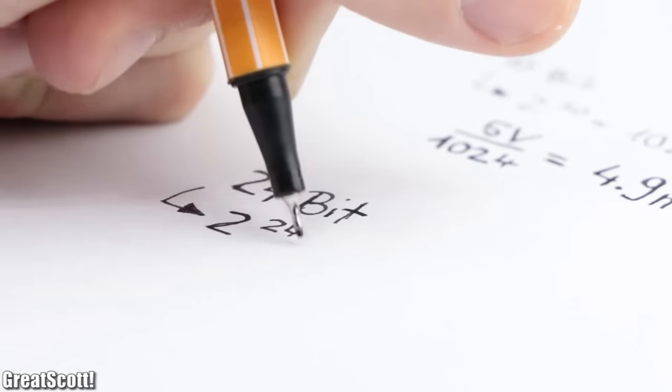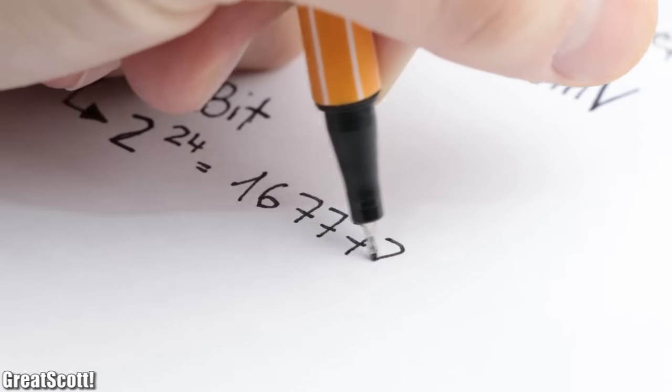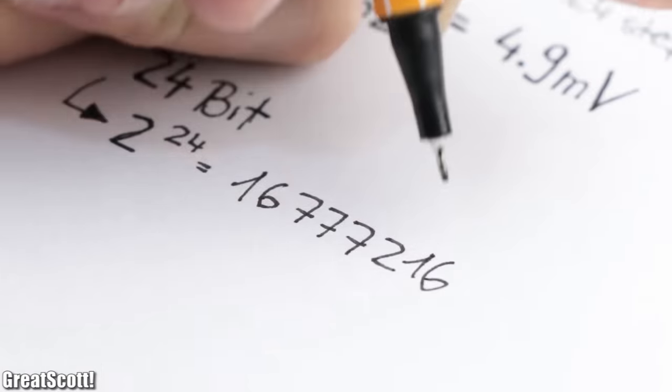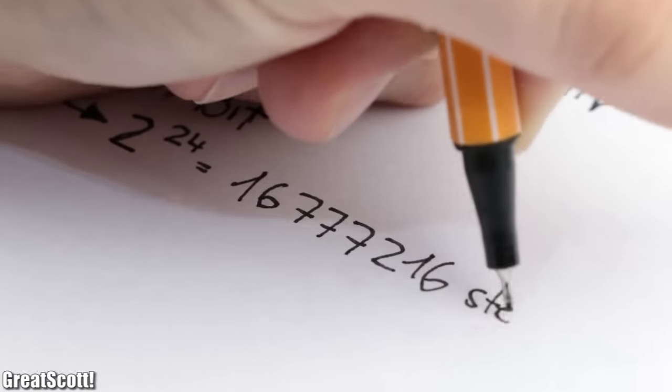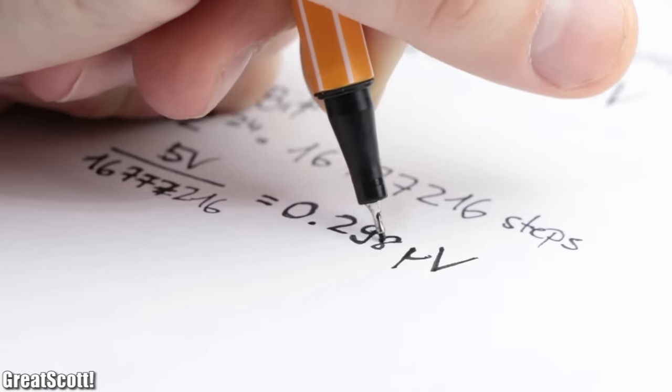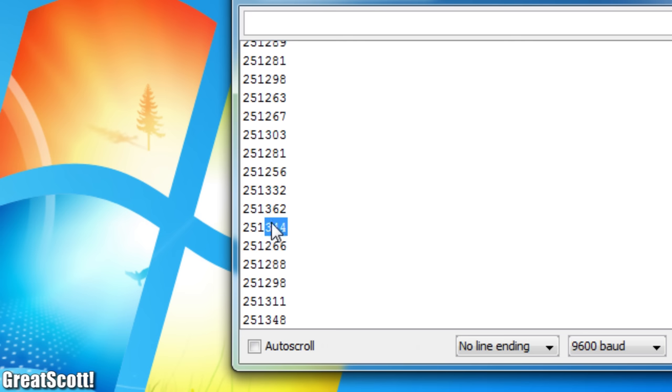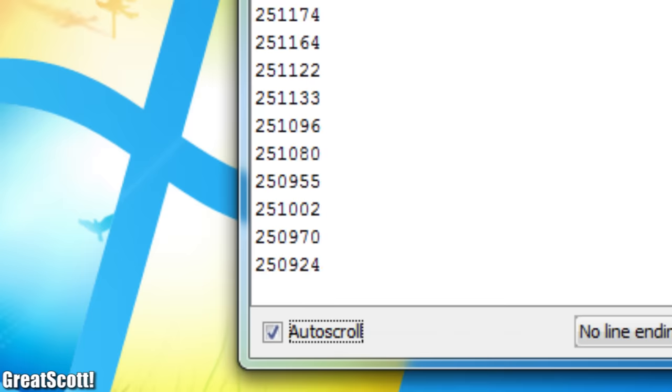But now we got a 24-bit resolution, which equals a total of, believe it or not, 16,777,216 steps, which subsequently equals voltage steps of 0.298 microvolts. This way we might get more noise in the readings, but we can measure way smaller forces.